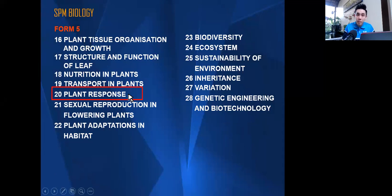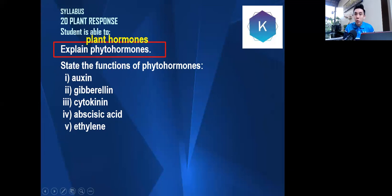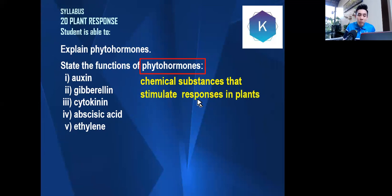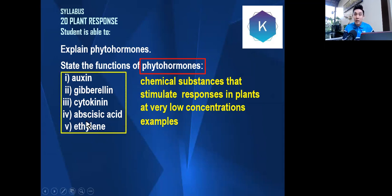Chapter 5, Form 5, is Plant Response. One of the subtopics is that we have to know how to explain the function of phytohormones. Phytohormones are plant hormones. If they ask you the definition — say they ask what phytohormones are — they are chemical substances that stimulate responses in plants, and they can occur at very low concentrations.